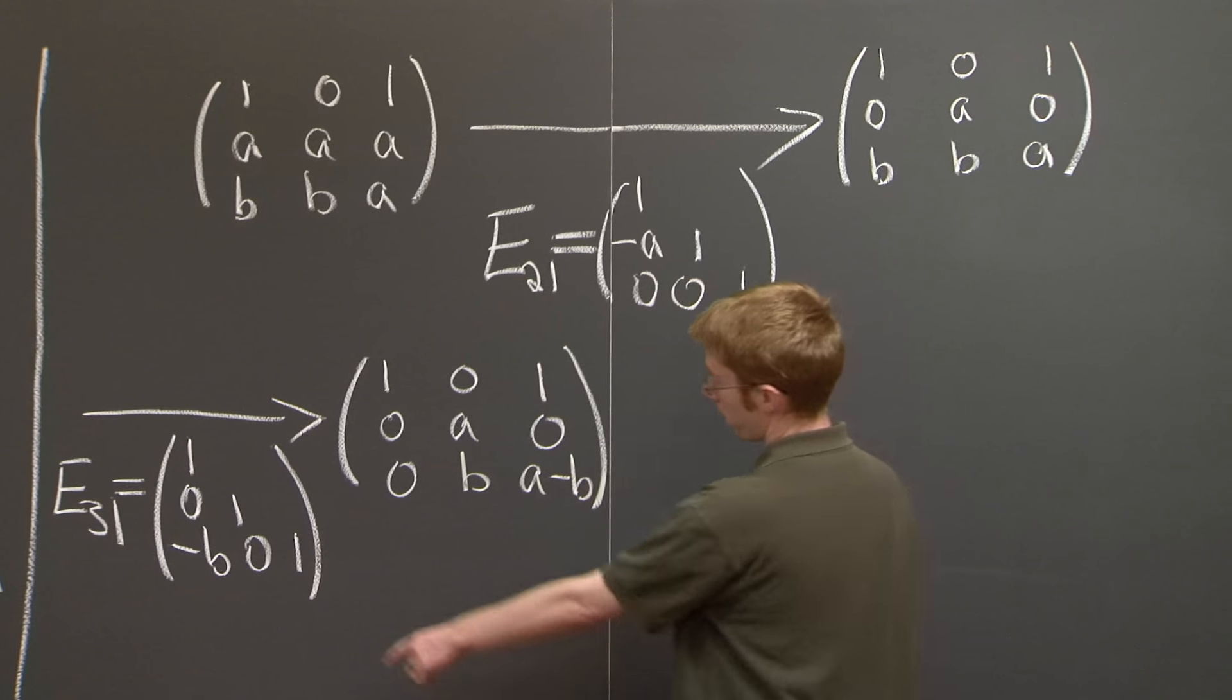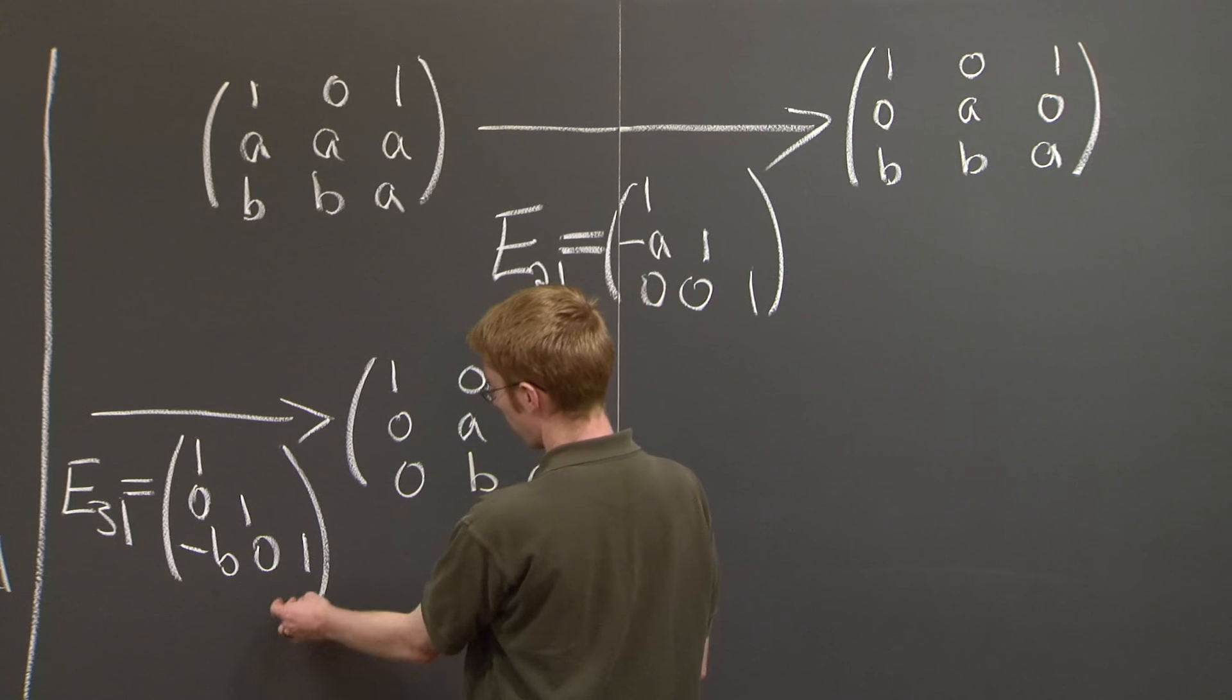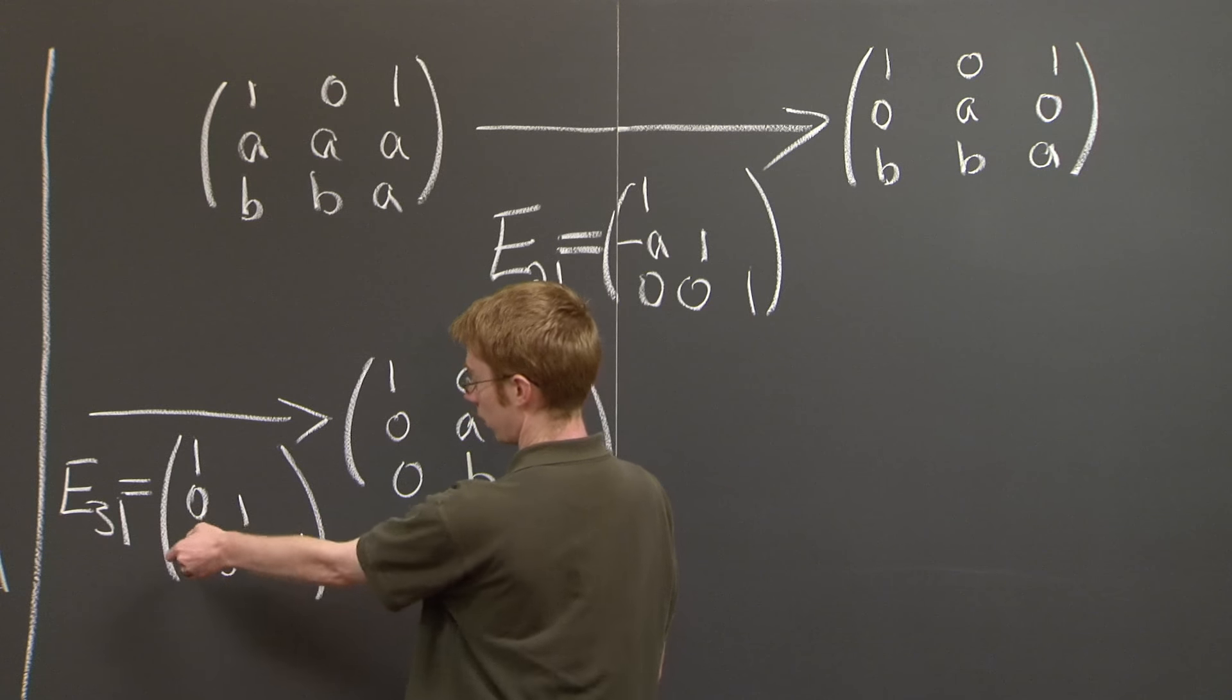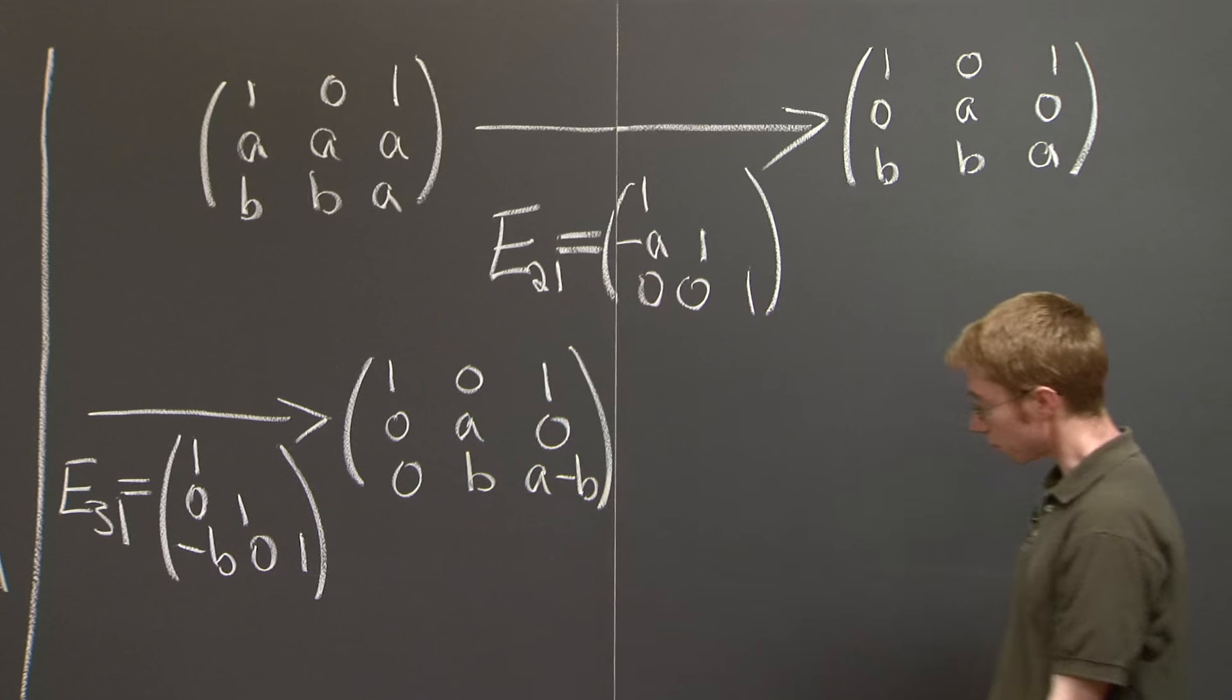Well, note we replaced the third row by the third row minus b times the first row. That's exactly what you should read off this elimination matrix. Good.